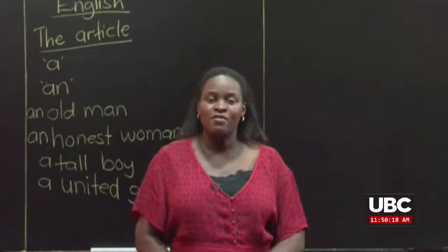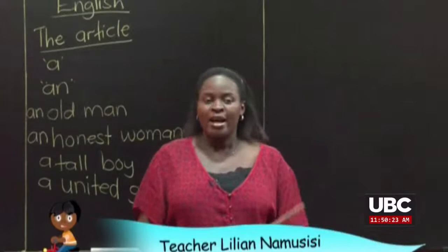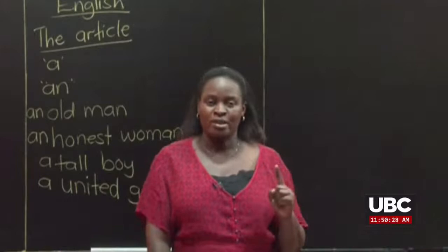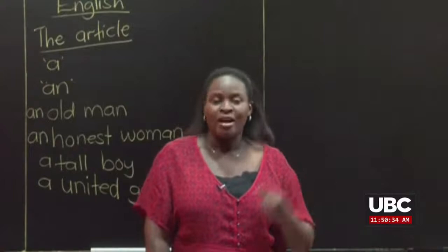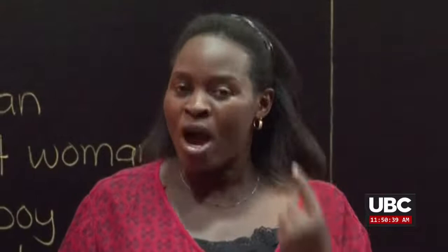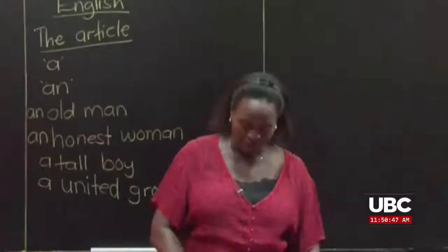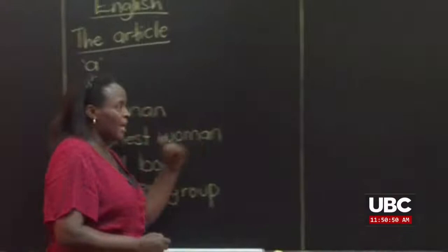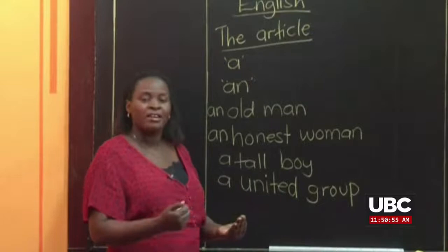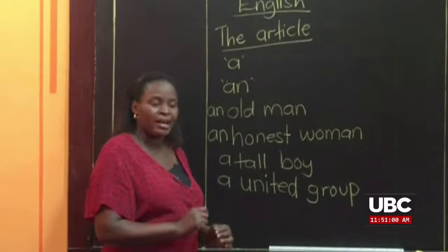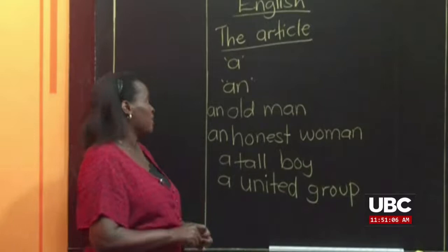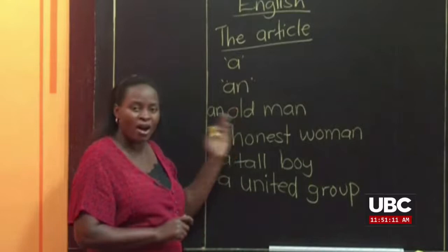When you use a consonant adjective to describe a person, this is always in the positive degree of comparison. When describing one person, we always use the article. For example: 'a tall boy', 'a beautiful woman', 'a short girl', 'a clever boy'. You are talking about one person — we use articles when talking about one person or one thing. We are trying to get the articles which we can use on our adjective words that describe different people.